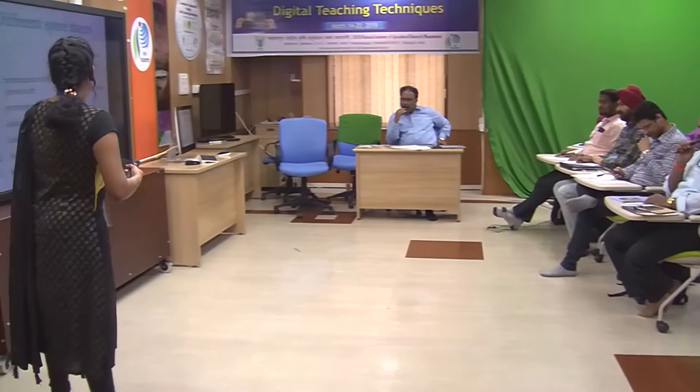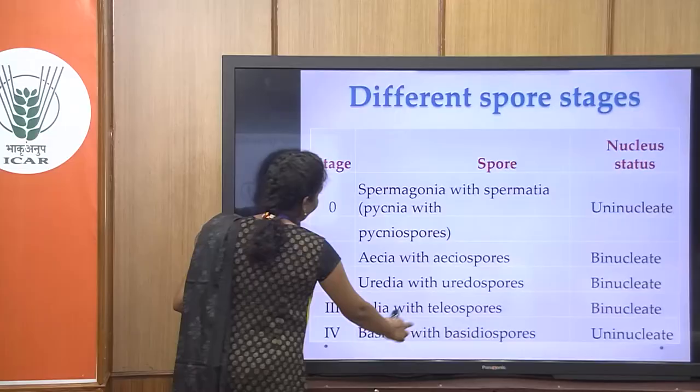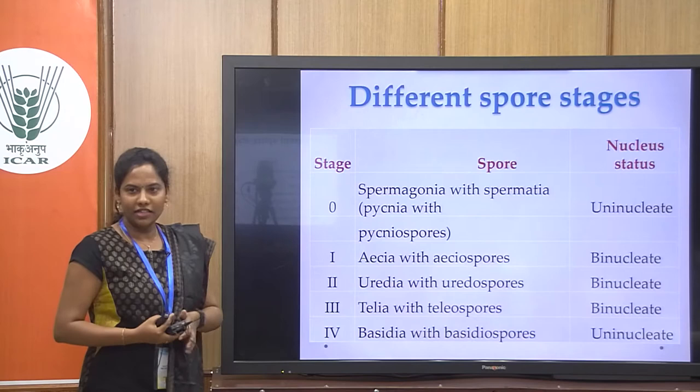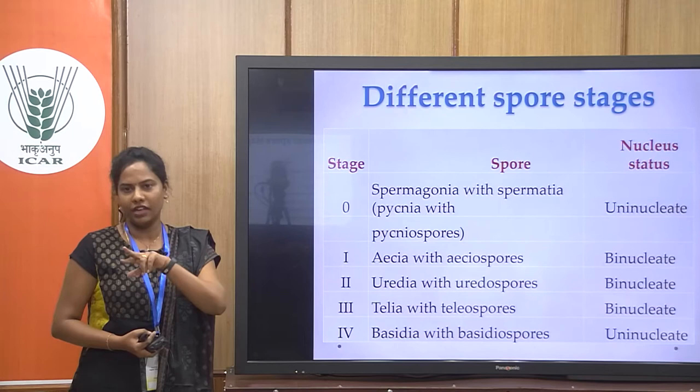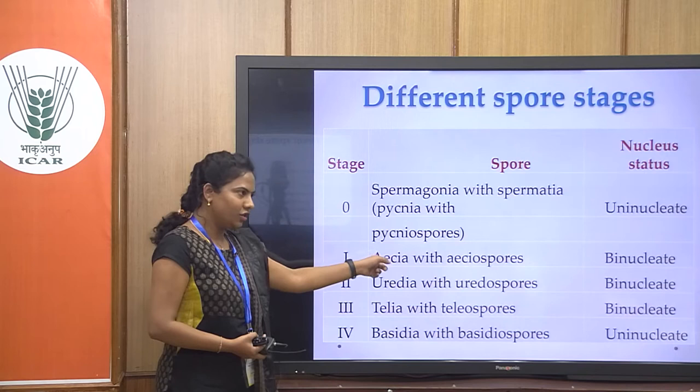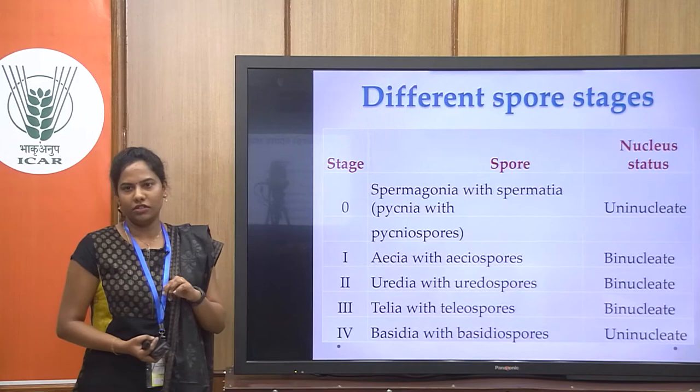You can see here the five spore stages. The first is the spermacia, also called pycnia, which produces pycniospores. The next is the aeciospores, the third is uredospores, then teliospores, and finally basidiospores. As it is a life cycle, the last basidiospore again produces the spermogonia. The first two stages — spermogonia and aeciospores — are produced on the barberry plant, and the next three stages are produced on the wheat plant.